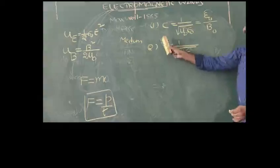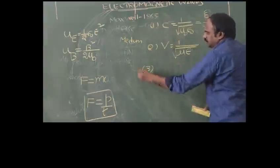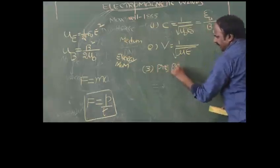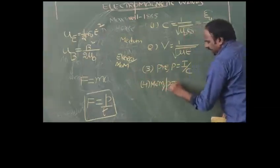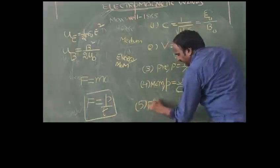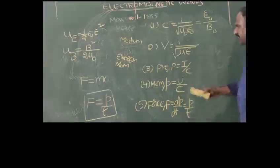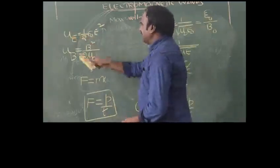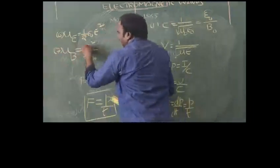The main purpose of electromagnetic waves is to transfer energy and momentum. Radiation pressure formula is I/c. Momentum formula is p = U/c, where U is energy and c is velocity of light. Force is F = dp/dt. Energy density in electric field: U_E = ½ε₀E². Energy density in magnetic field: U_B = B²/(2μ₀).